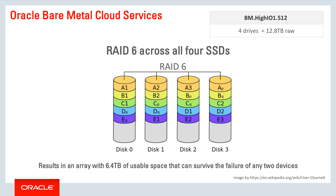Another option is RAID 6 across all four SSDs. RAID 6 uses dual parity, which means you still have 6.4 terabytes of usable space, but you can survive the failure of any two devices. RAID 6 is excellent if you need additional durability, but it is slightly slower than the previous two examples.